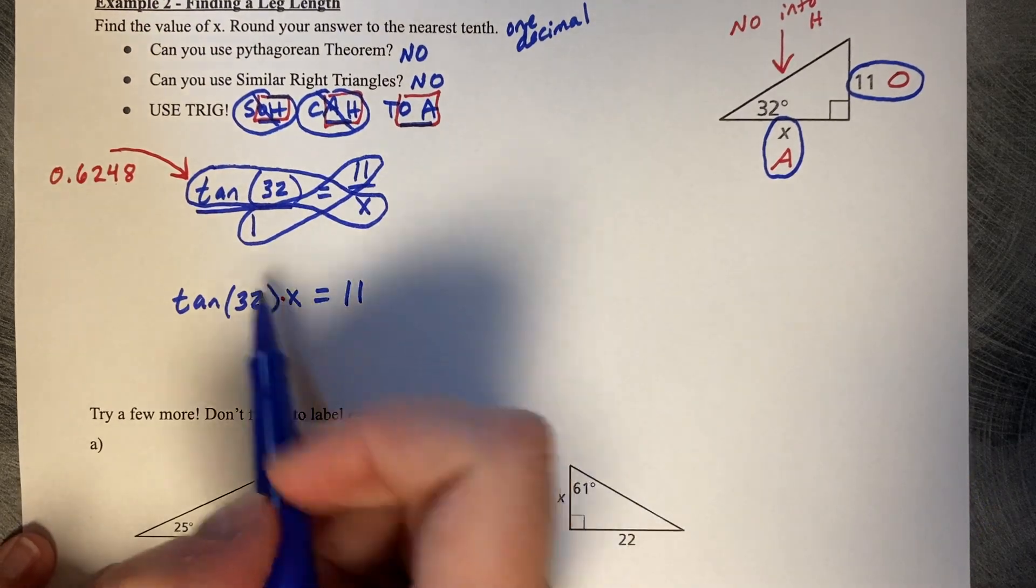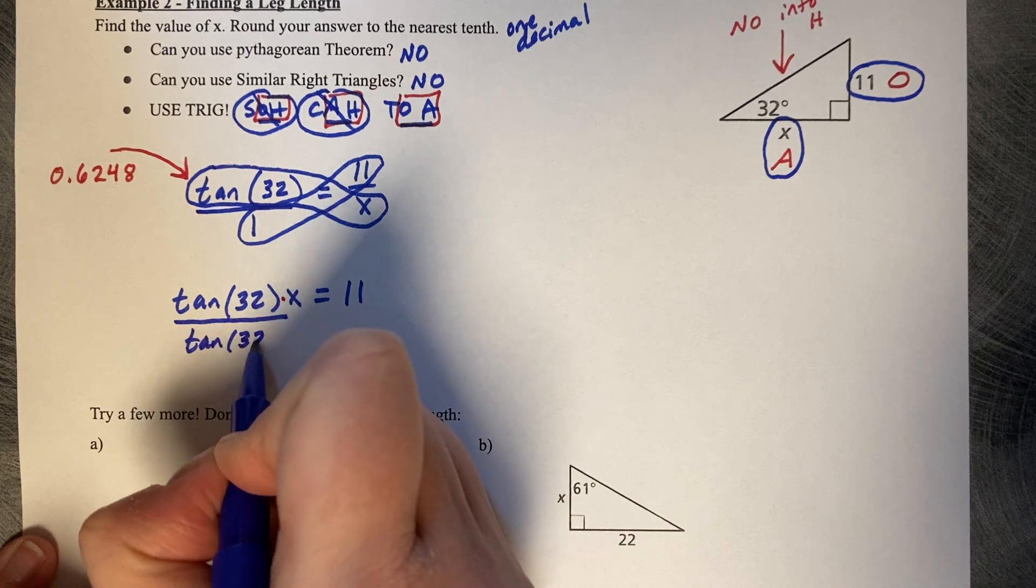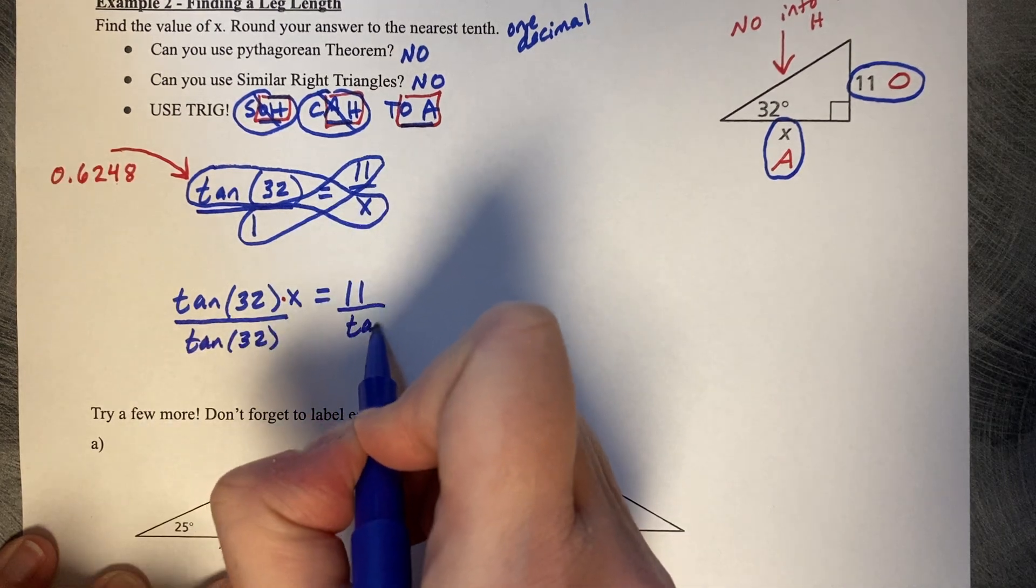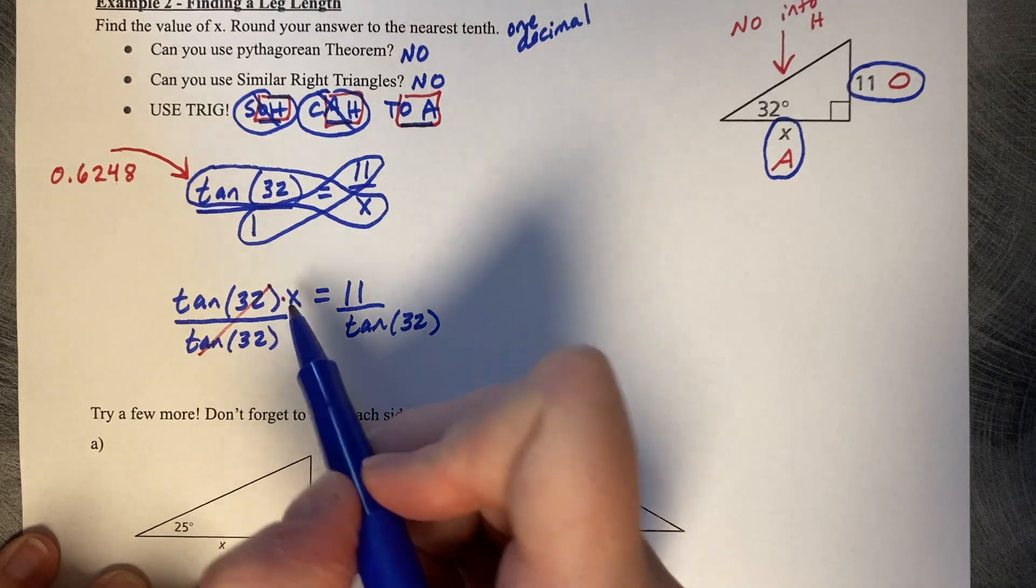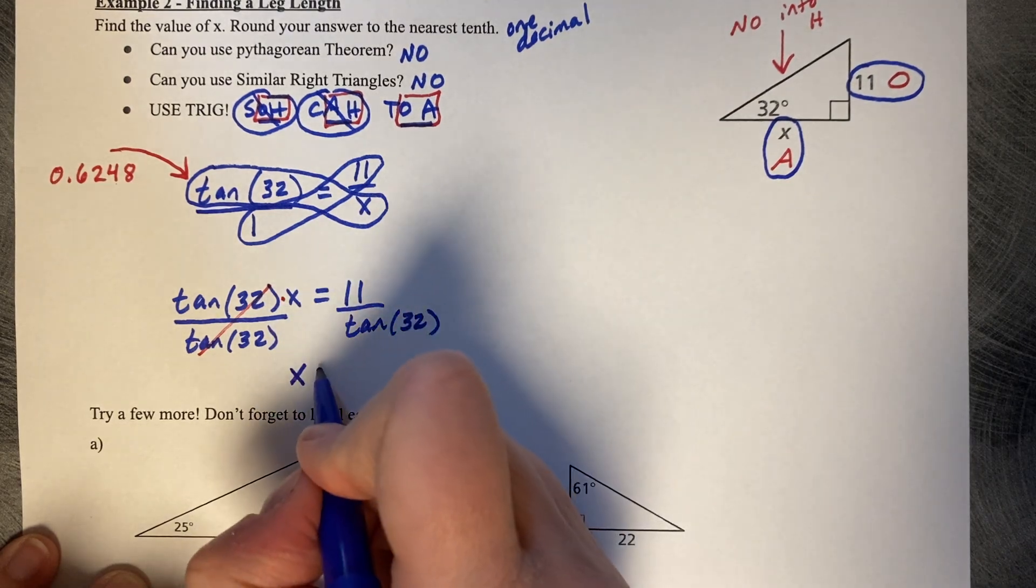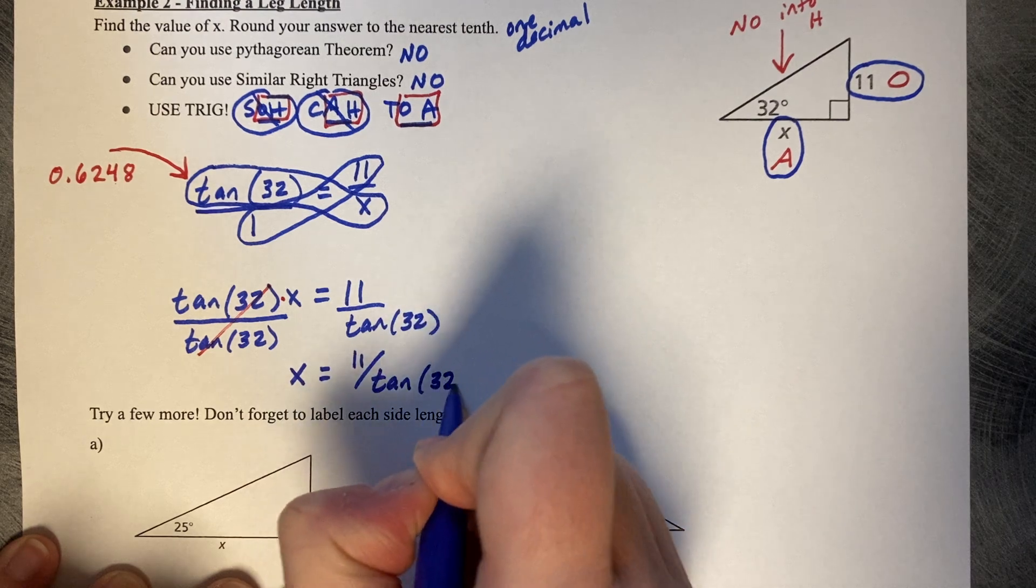We want to get X by itself, so we're going to divide off the tangent of 32 on both sides. When we divide off the tangent of 32, all we're left with is X equals 11 divided by the tangent of 32.